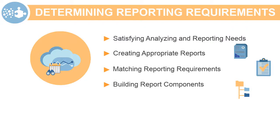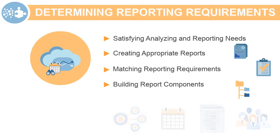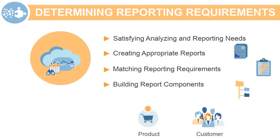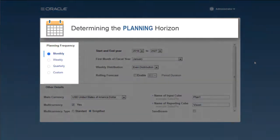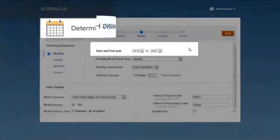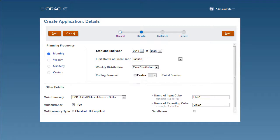If reports are created by cost center, year, account, or customer, ensure that those components are built into the application. Identify if additional dimensions, such as product or customer, are needed. Do you plan on a monthly or yearly basis? How many years of historical data do you need to maintain, and how many years into the future do you want to plan? This will determine what the year dimension will look like.